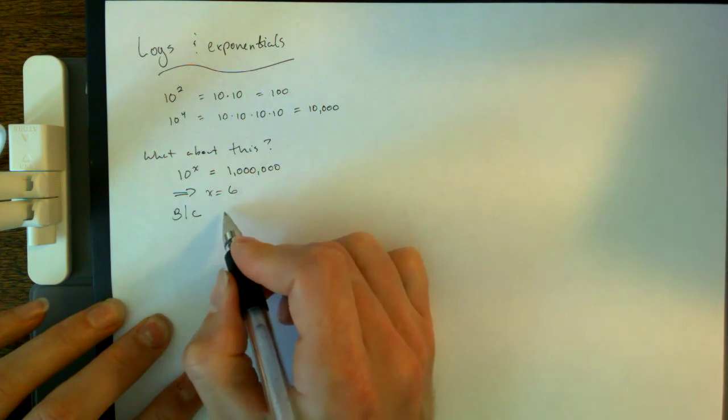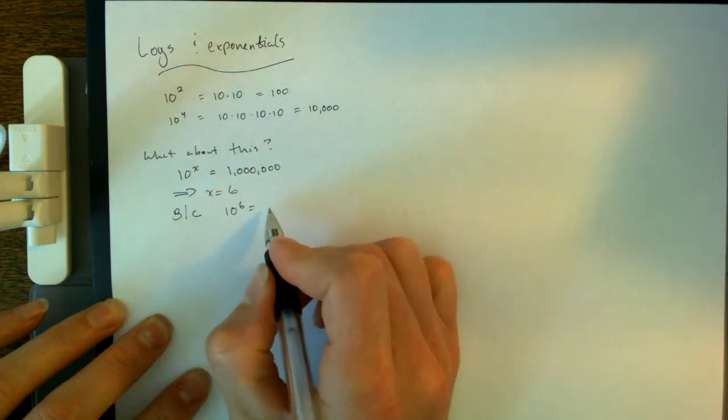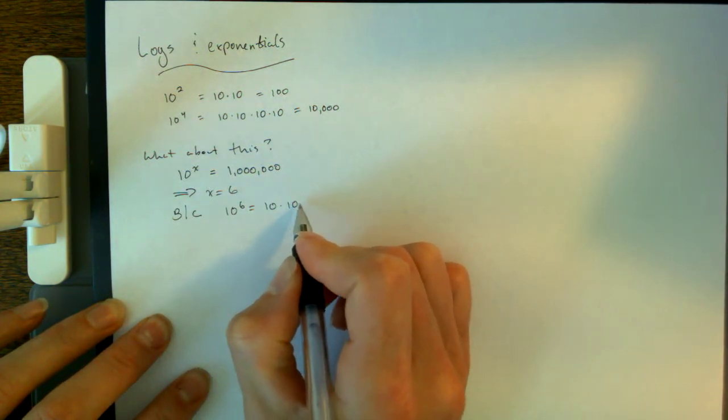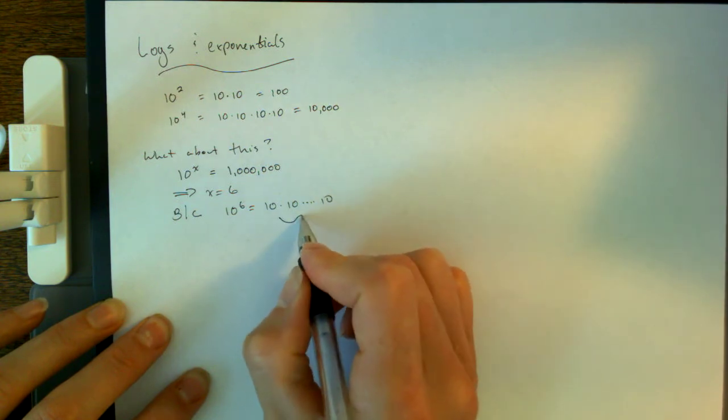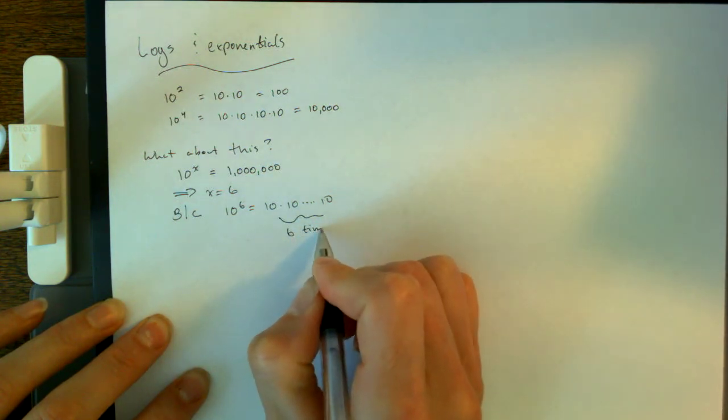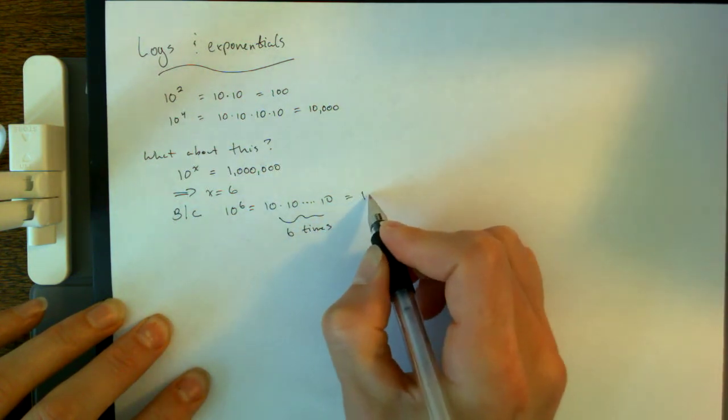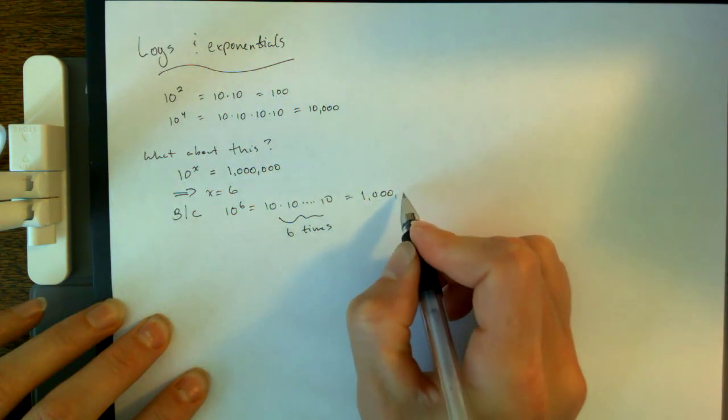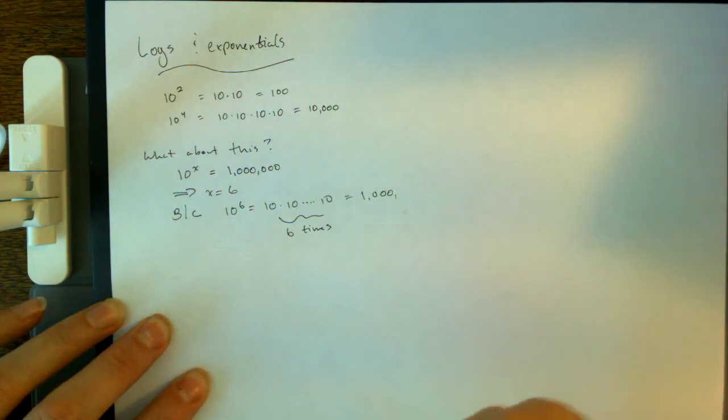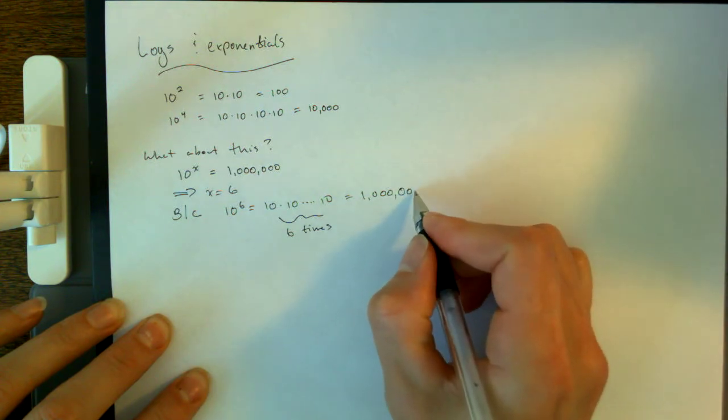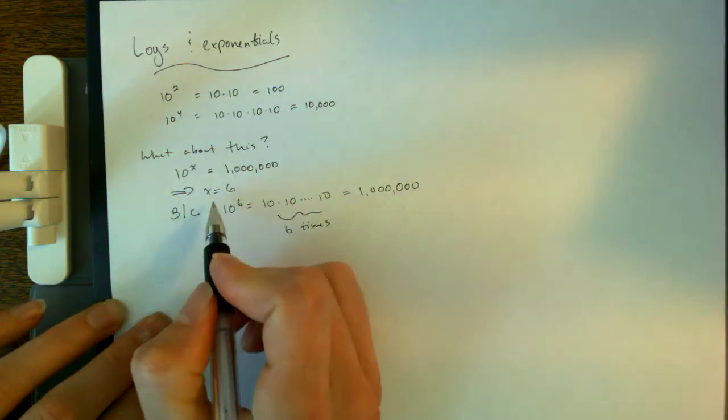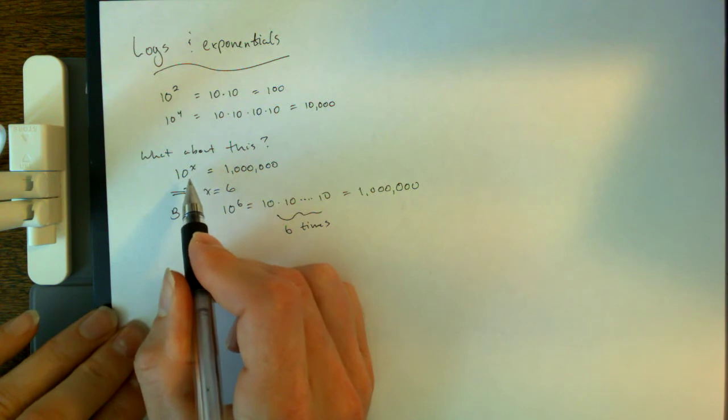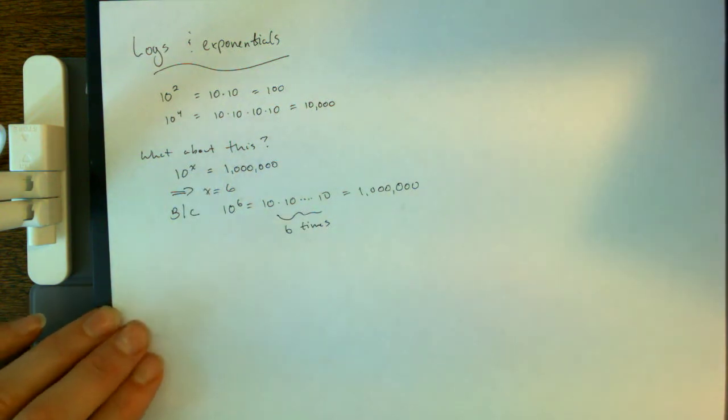And the reason, if you ask why must that be, is because 10 to the power 6, that's 10 times 10 times 10, 6 times here. That is 1,000,000, and you can do that either just adding them up yourself, 10 times 10 is 100 times 10 is 1,000, et cetera, or you could plug it into a calculator if you want. So x here is the solution to this equation, 10 to the x equals a million.